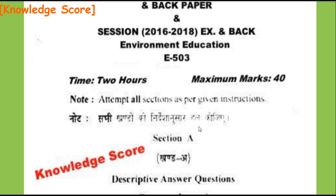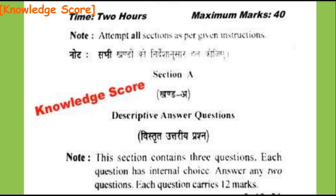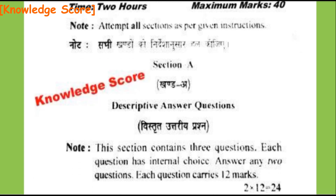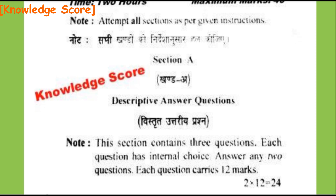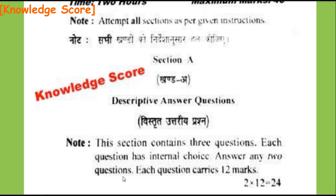All of the things in this paper — there are 3 sections: Section A, Section B, and Section C. First of all, we start Section A, the descriptive answer questions. This section contains 3 questions, each question has internal choice. Answer any 2 questions. Each question carries 12 marks — 2 into 12 equals 24.